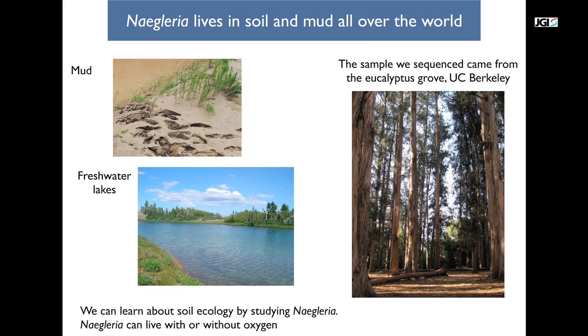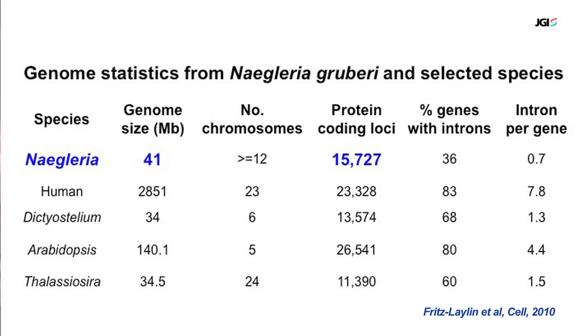Niglaria can be found in mud and wet soils all over the world. If you take pretty much any sort of wet mud soil sample, you can probably find Niglaria in it. The Niglaria genome is 41 megabases, which is pretty small for a genome, but it contains around 16,000 genes.